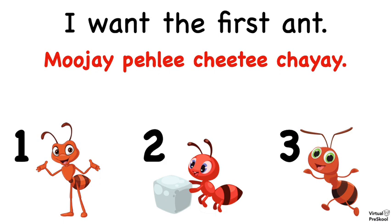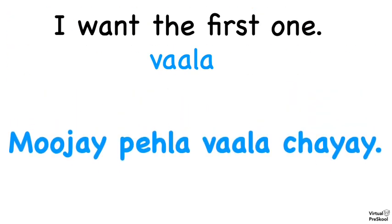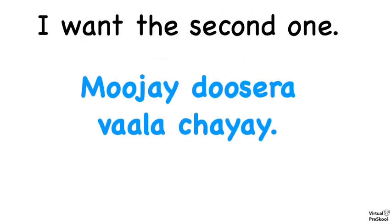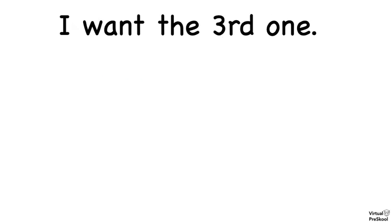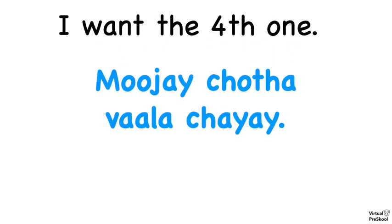Now let's talk about another way to say these phrases. So far, we have used the word for the animal in the sentence — for example, 'I want the first tiger.' Another way is simply 'I want the first one,' where we don't use the animal. Instead, we use the word vala. So the sentence becomes mujhe pehla vala chayyeh, which means 'I want the first one.' I want the second one: mujhe dusara vala chayyeh. I want the third one: mujhe tisara vala chayyeh. I want the fourth one: mujhe chota vala chayyeh.